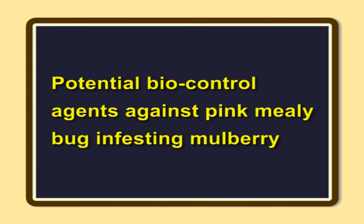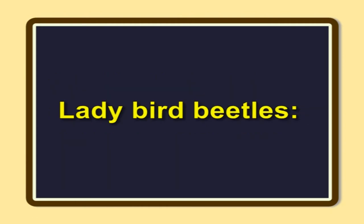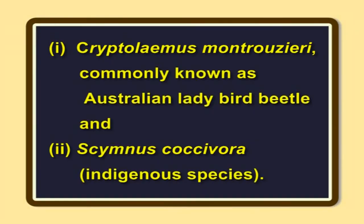Potential biocontrol agents against pink mealybug infesting mulberry — Ladybird beetles. Several species of ladybird beetles are known to feed voraciously on all stages of pink mealybug (Maconellicoccus hirsutus) that infest mulberry. Important among them are Cryptolaemus montrouzieri, commonly known as Australian ladybird beetle, and Scymnus coccivora, an indigenous species. Both adults as well as grubs of Cryptolaemus montrouzieri are known to predate on all stages of the mealybug. The male beetles can be distinguished from the female by the coloration of the first pair of legs: the first pair of legs in the male beetle is brown and the other two pairs are black, whereas in the female, all three pairs are black.